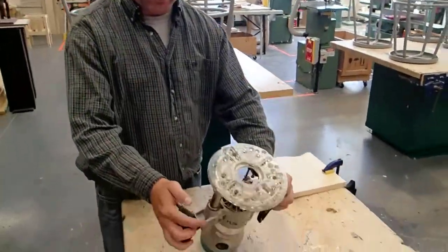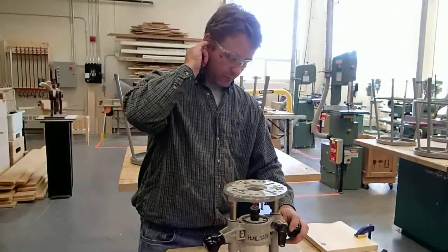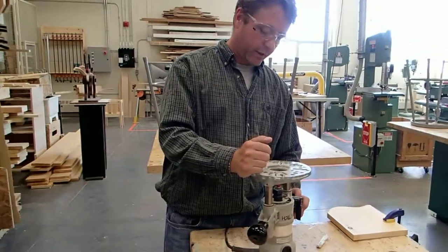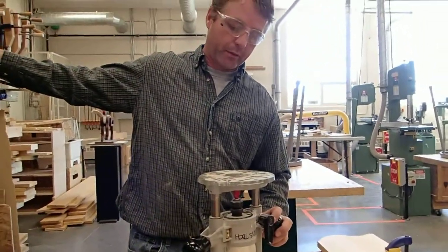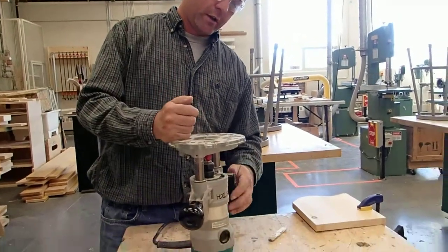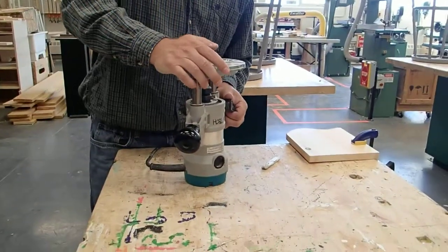This is the Makita handheld router. You can use it basically the same as the table router we did previously. With this handheld one, you can put chamfers and radiuses on stuff.